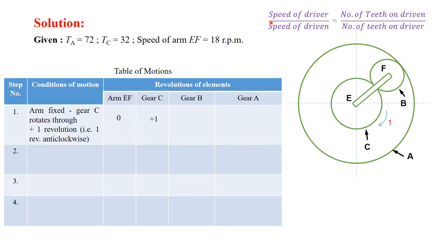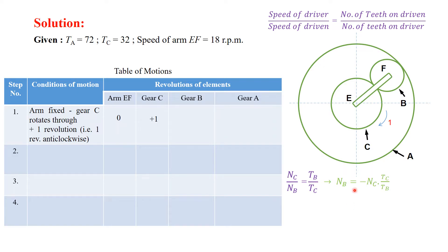To calculate the revolution of gear B, we use the basic relationship between driver and driven: speed of driver divided by speed of driven equals number of teeth on driven divided by number of teeth on driver. Here the driver is gear C, so: Nc / Nb = Tb / Tc. From this equation we get Nb = Nc × (Tc / Tb).